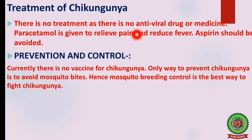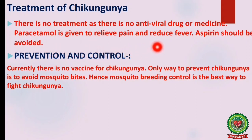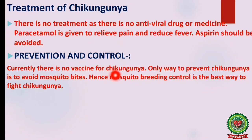There is no antiviral drug or medicine available for the treatment of chikungunya. Paracetamol is given to relieve pain and reduce fever; aspirin should always be avoided in cases of both dengue and chikungunya. There is no vaccine available so far; the only way to prevent chikungunya is to avoid mosquito bites, so mosquito breeding control is the best way to fight chikungunya.